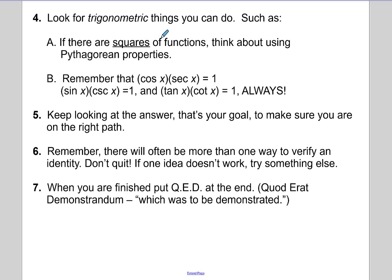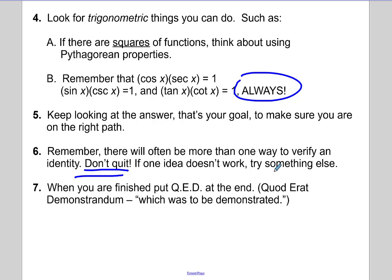You can also look for trig things to do — if there are squares of functions you could apply the Pythagorean identities. Remember things like cosine times secant is 1, sine times cosecant is 1, and tangent times cotangent is 1. Keep looking at your answer as your goal to make sure you're on the right path. There will often be more than one way to verify an identity, so if one idea doesn't work, go back and try something else.